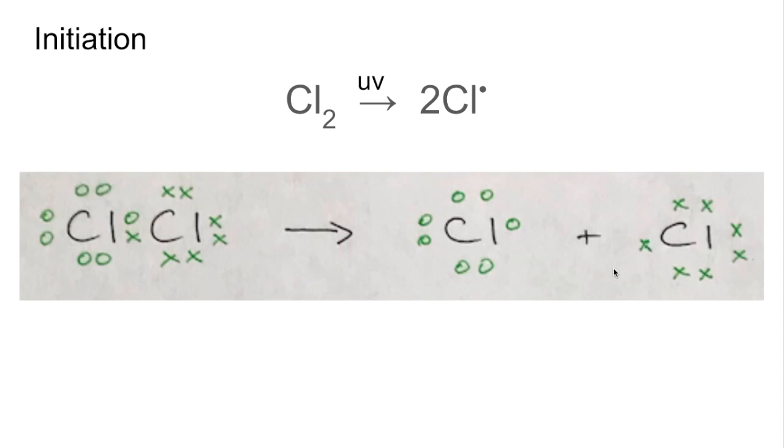So this kind of bond breaking, where there's an equal sharing of electrons from the bond that's broken, is called homolytic fission.